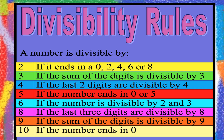Here is a quick recap of divisibility rules. A number is divisible by 2 if it ends in 0, 2, 4, 6, or 8 — it is an even number. For 3, if the sum of the digits is divisible by 3. For 4, if the last two digits are divisible by 4. For 5, if 0 or 5 is at the ones place. For 6, if divisible by both 2 and 3. For 8, if the last three digits are divisible by 8. For 9, if the sum of the digits is divisible by 9. For 10, if the number ends in 0. Thanks a lot.